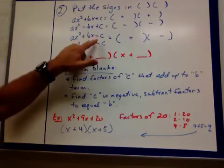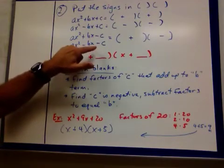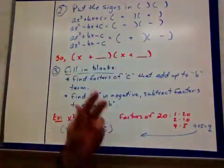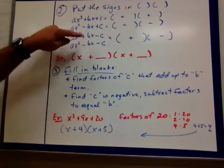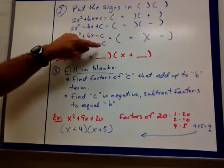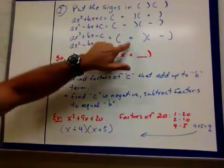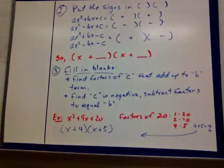If your c term, if your constant term is a minus, then you're always going to get a plus minus or minus plus, it's the same thing. Irregardless of what you get here, if this is a minus minus, or if these are minuses, you're going to get a plus minus. That holds every time.